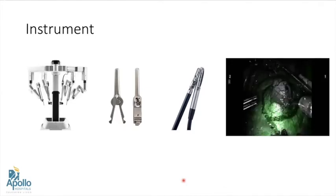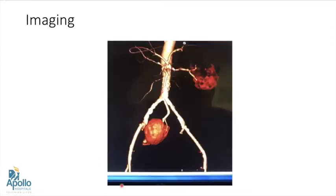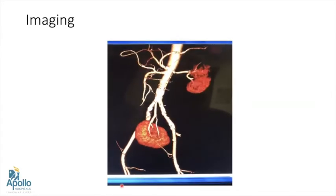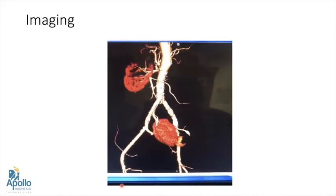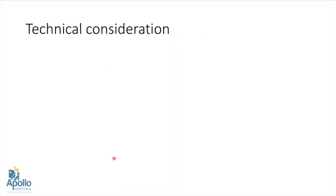The ICG or Firefly system plays a very important role, especially when doing super-selective clamping, or if the angle is not available — we can clamp the vessel and confirm whether we have completely cut off the blood supply. Imaging is very important in partial nephrectomy, and a good 3D reconstruction is a blessing. Knowing the vascular anatomy means almost 25–30% of the job is already done.